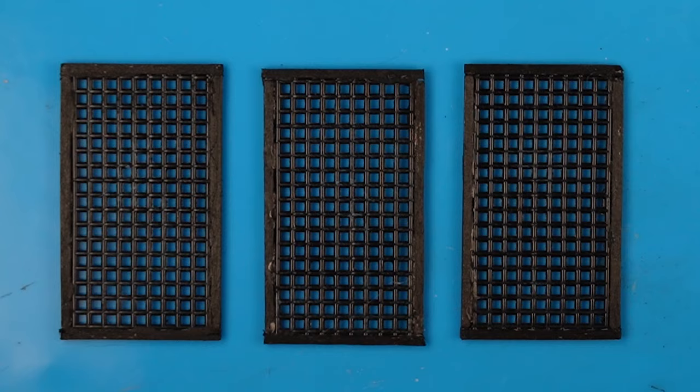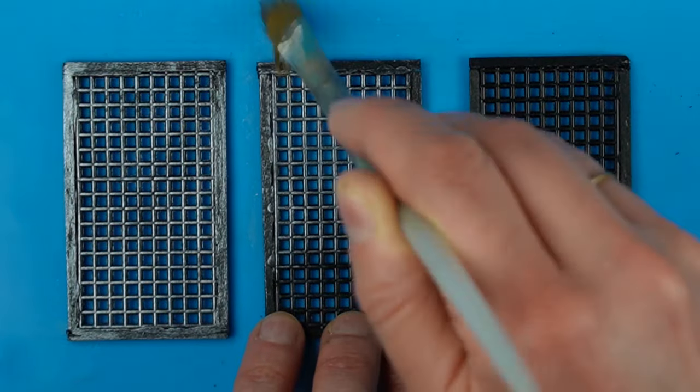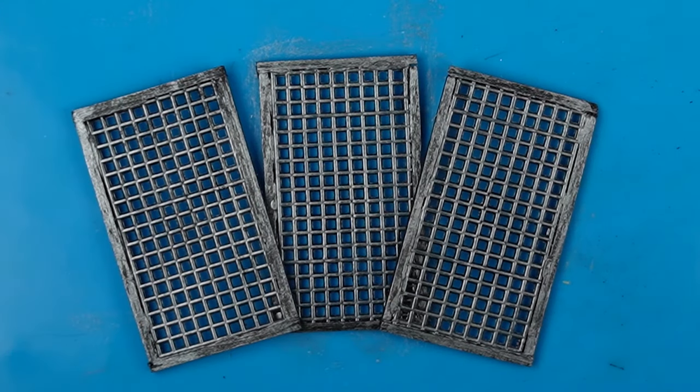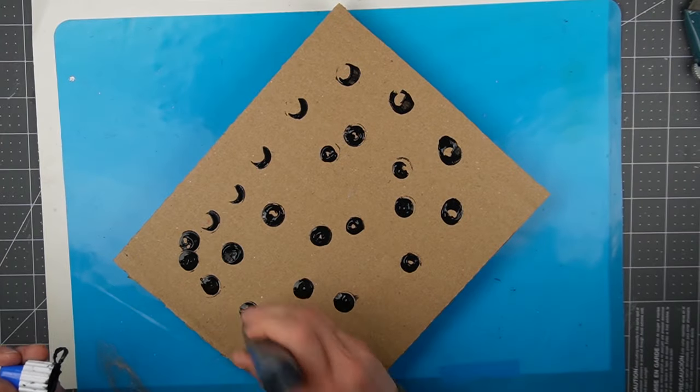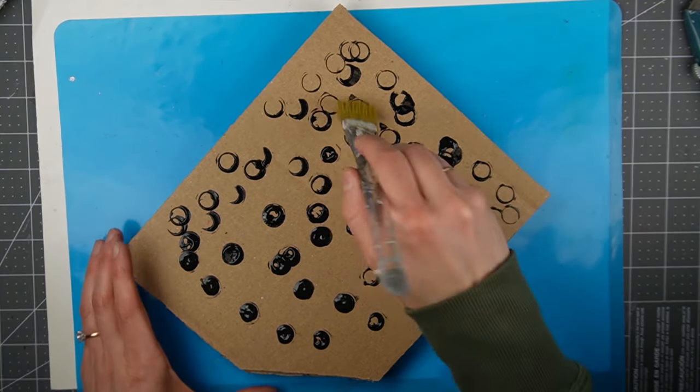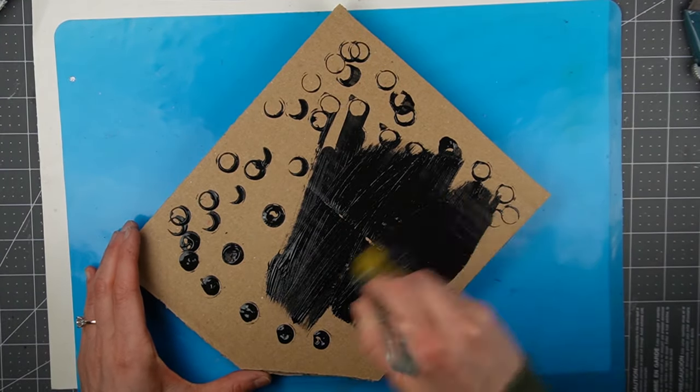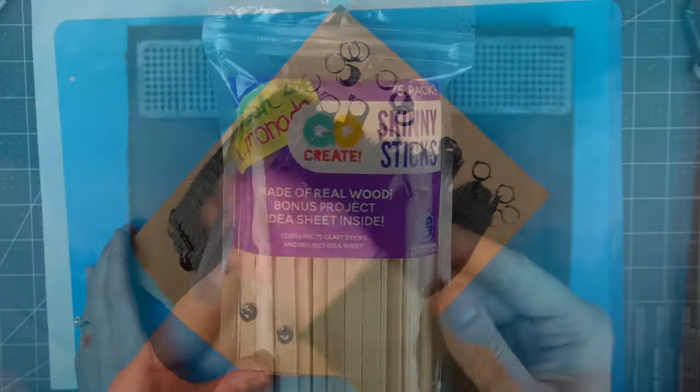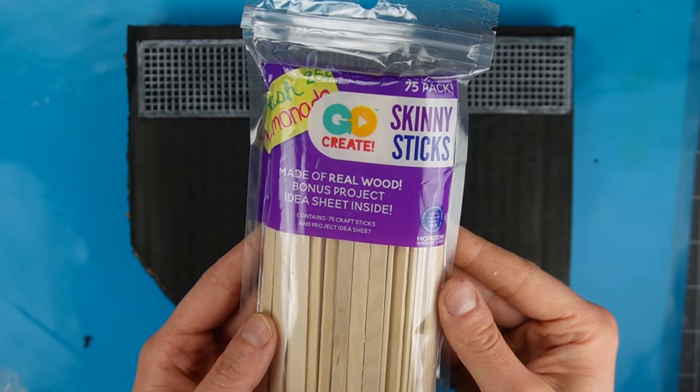The faux metal grates are complete and we're ready to make the rustic wooden floor. I started with a black base coat in case there are any gaps between the boards and my finished floor. I'm using some skinny sticks I bought at Walmart.